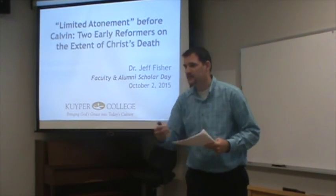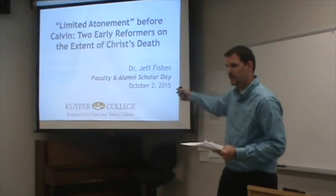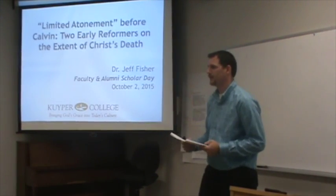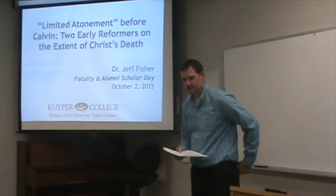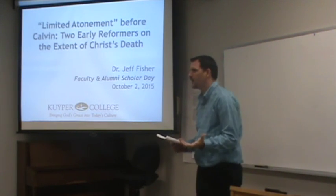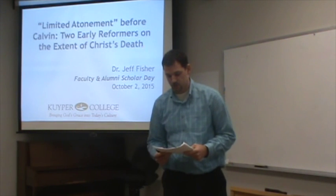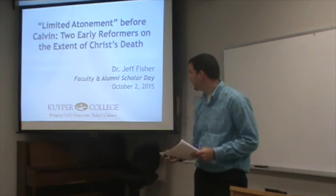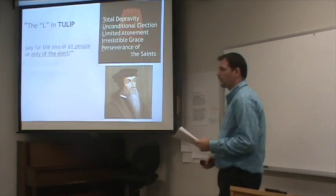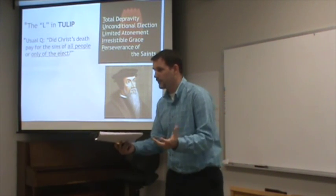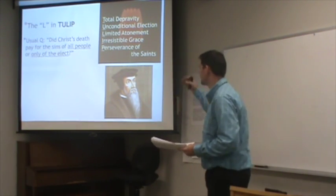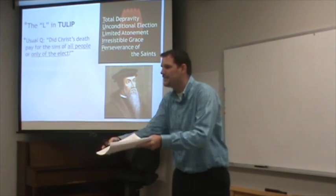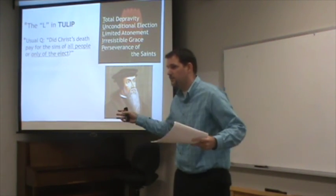I'll be reading part of this, commenting on it, and I've provided some pictures up here as well. On your handout you've also got pictures of these figures from the 16th century. One of the most controversial topics in Reformed theology is the teaching unfortunately labeled limited atonement — this is the L in TULIP, the acronym used to describe the five points of Calvinism. This presentation digs deeper into one of these and expands it out historically.